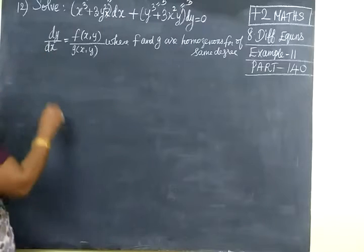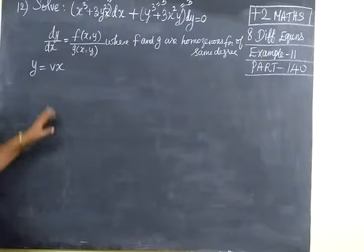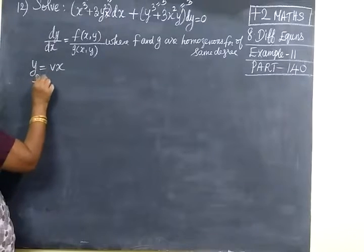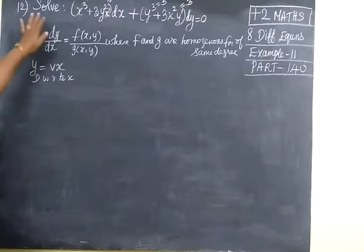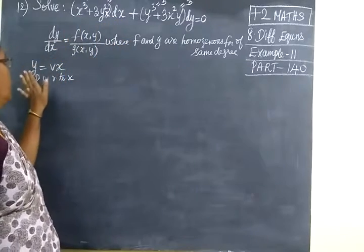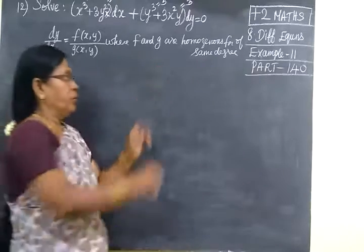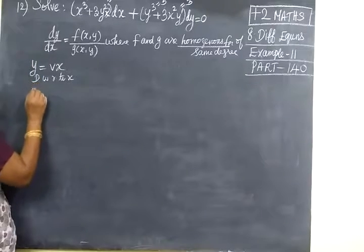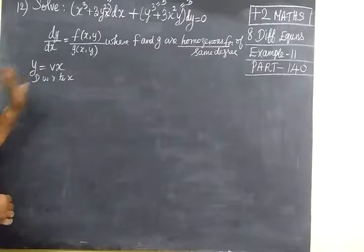For that we are using the method y equal to vx. Once if it is a homogeneous equation, we are using the method y equal to vx. Now differentiate with respect to x. First we see whether it is a homogeneous function or not. After that, if it is a homogeneous function, we use the method y equal to vx to get the variable separable form.